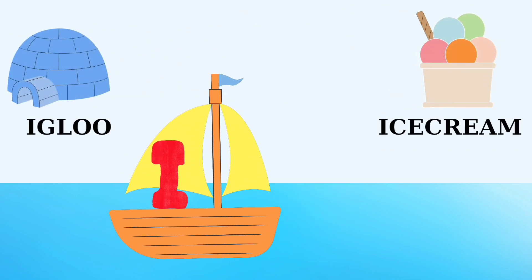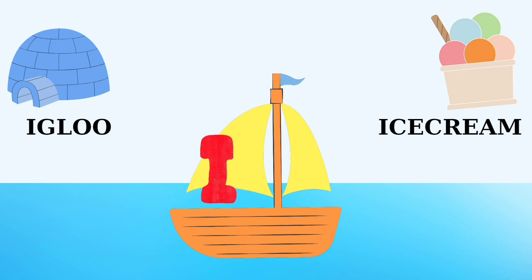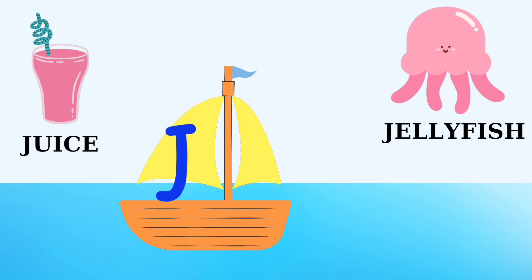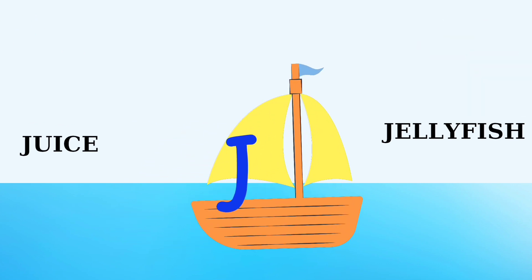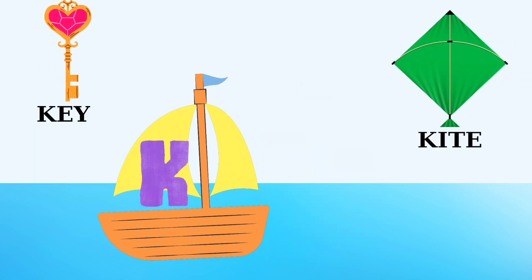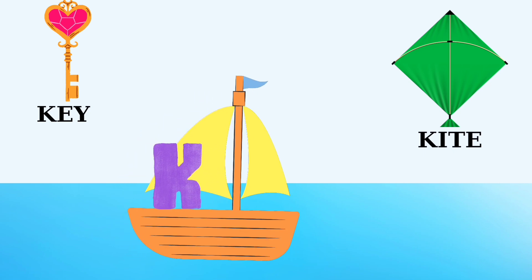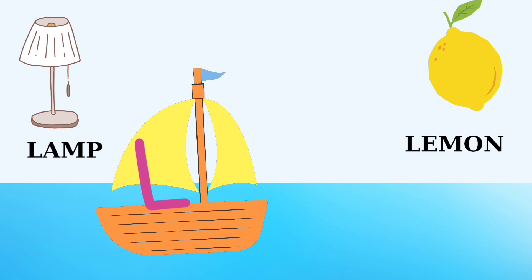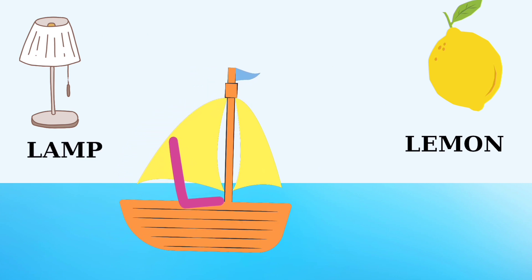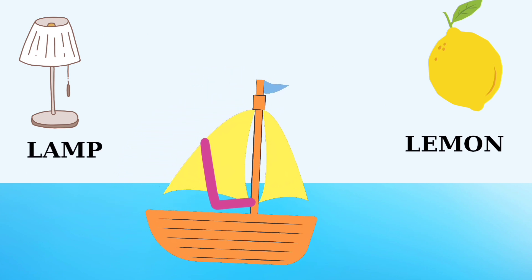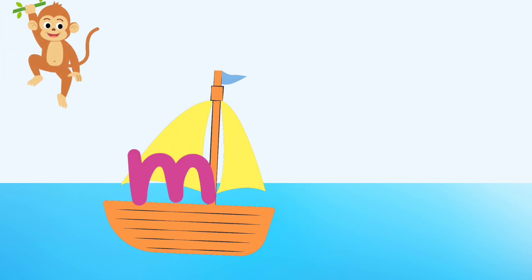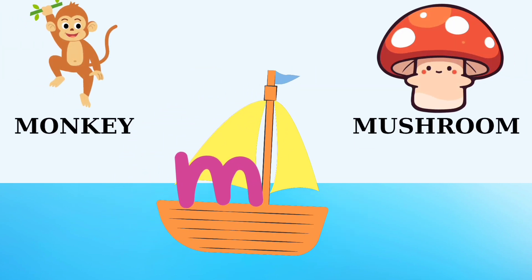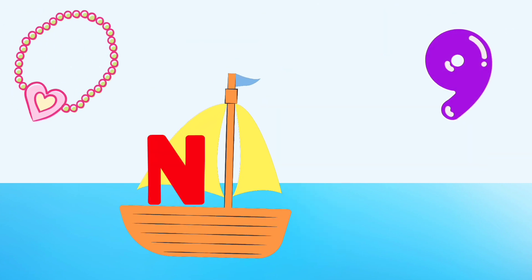I is for ice cream. J is for juice, J is for jellyfish. K is for key, K is for kite. L is for lamp, L is for lemon. M is for monkey, M is for mushroom. N is for...